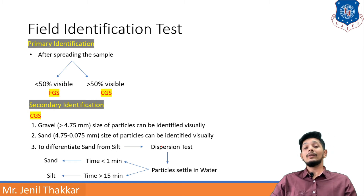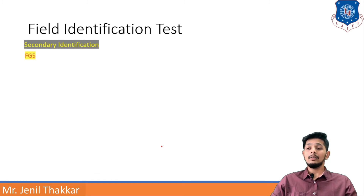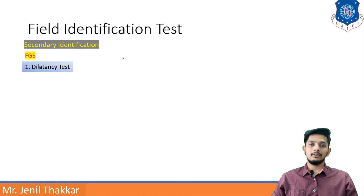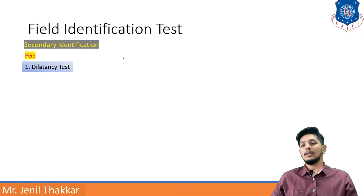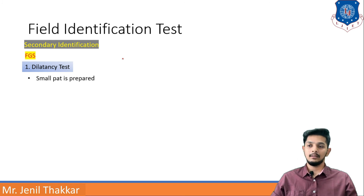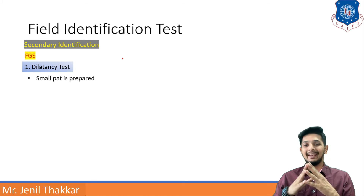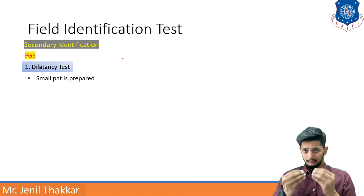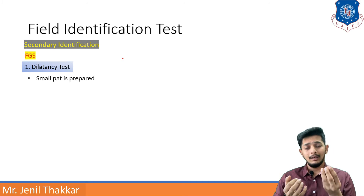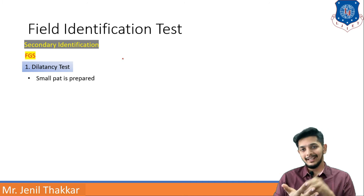Moving to secondary classification for fine-grained soil (FGS), four tests are performed. The first is the dilatancy test. A small pat of soil is prepared — a small amount of soil taken in the hand. Then a shaking and squeezing motion is applied horizontally so the soil gets mixed.